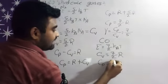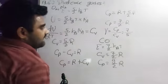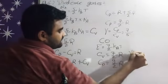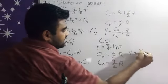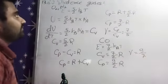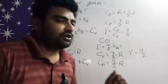Cp, then we get 9 by 2 into R and after all, gamma will be Cp upon Cv, so we get 9 by 7. So, that's our diatomic gases.